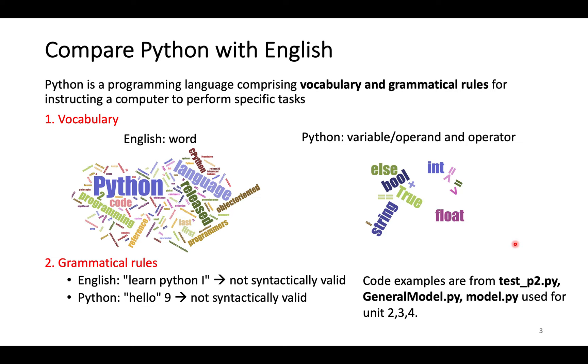Similar to English, Python is another formal language comprising vocabulary and a set of grammar rules to instruct computers. The vocabulary in English is words. For Python, the vocabulary we are going to learn is variables, or operands, and operators.